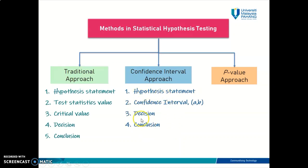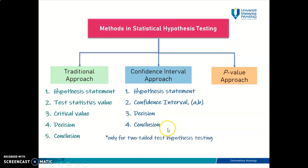So those are the four steps in hypothesis testing using the confidence interval approach. I have one good news for you: the confidence interval approach is only applicable for a two-tail test hypothesis testing. So you no longer need to worry about whether this is a one-tail test or a two-tail test. You can only conduct hypothesis testing using this approach if your hypothesis involves a two-tail test.